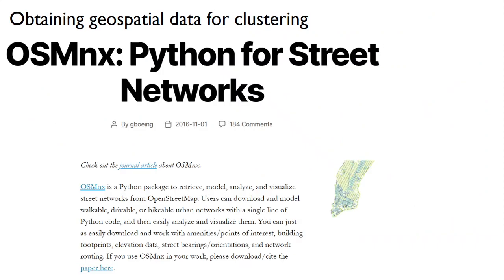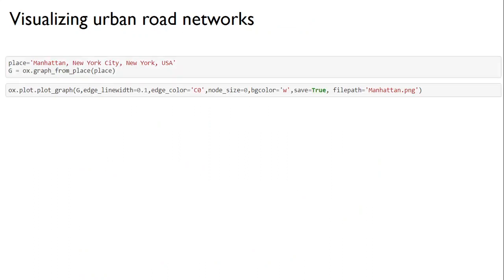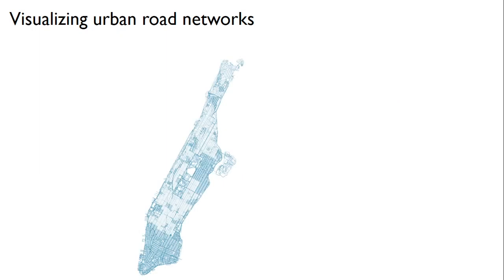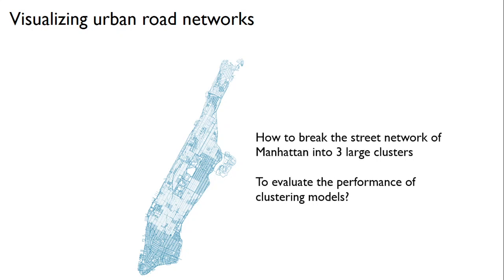OSMNX is a Python-based package that obtains data from OpenStreetMap for subsequent network analysis. We'll use OSMNX for our geospatial data. From OSMNX, you can obtain the street network of Manhattan, which is essentially one large connected cluster of roads. For our analysis, we want to break the street network of Manhattan into three clusters to evaluate the performance of the clustering models mentioned.